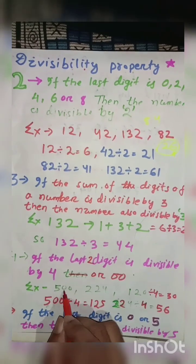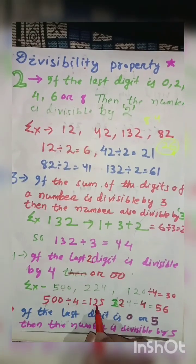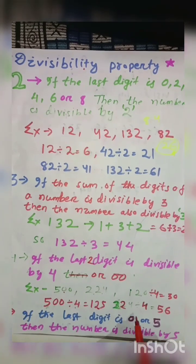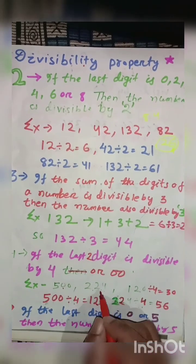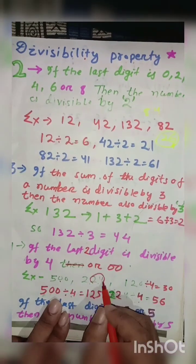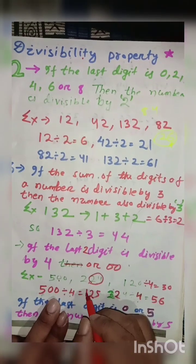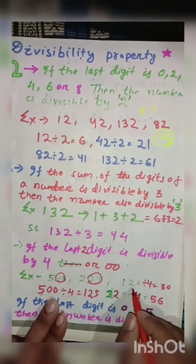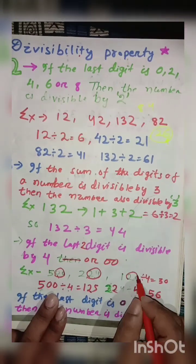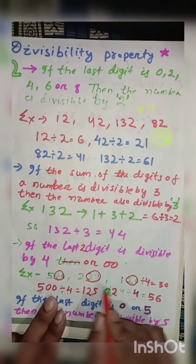So 500 divided by 4 will get 125. 224 divided by 4 you get 56 because 24 is a multiple of 4 or it comes in the 4 table. And 500 has double 0, and 120 also comes in the 4 table.